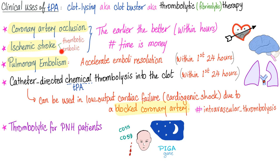Ischemic stroke — thrombotic or embolic — is another key indication. Never use TPA in hemorrhagic strokes. Pulmonary embolism is also an indication: use TPA to accelerate emboli resolution, again within the first 24 hours. The earlier the better — don't wait the full 24 hours; two to three hours is ideal.